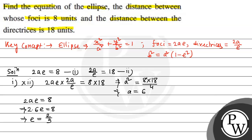Now, another property we know: b² = a²(1 - e²). So b² = 36 × (1 - 4/9). So b² = 36 × 5/9. So b² = 20.